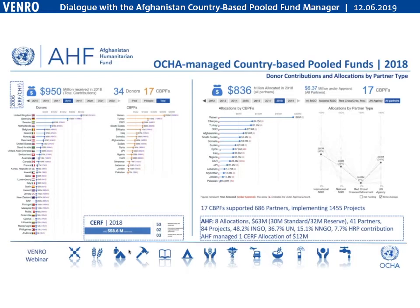The largest sums of money went to Yemen, Turkey, DRC, South Sudan, Ethiopia, and Iraq — countries with highly prominent emergencies. Afghanistan received $46 million last year, mainly to respond to a drought which mobilized significant resources. We dispersed $62 million in Afghanistan — about $20 million was carryover from the previous year — and we performed quite well in terms of dispersing funds.